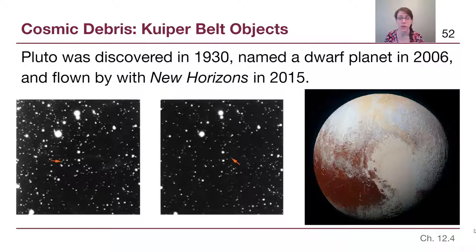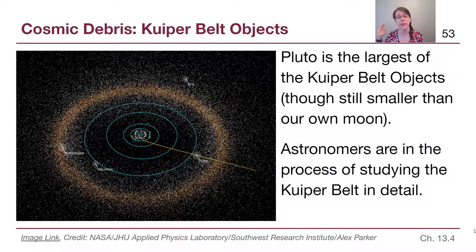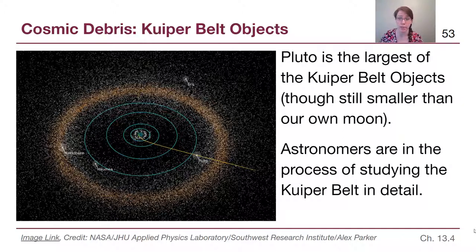The very first time a spacecraft got close-up observations of Pluto was in 2015, when the New Horizons mission took the image we see here on the far right. Scientists are still working to study the data gathered. The mission was never intended to orbit Pluto — it was on a slingshot trajectory past Pluto to get close-up imagery and then continue beyond to study more Kuiper Belt objects.